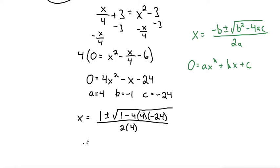Now we need to simplify. 1 plus or minus the square root of, I'm going to simplify the 4 times the 4, 4 times 4 times 24 is 384, and a negative and a negative makes positive. So that would be 1 plus 384, and then all over 2 times 4 is 8.